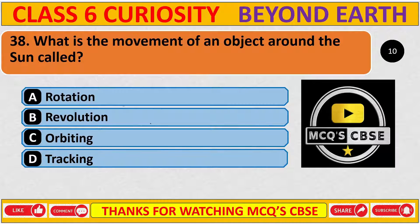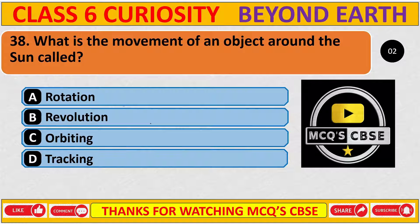What is the movement of an object around the sun called? The correct answer is B, revolution.